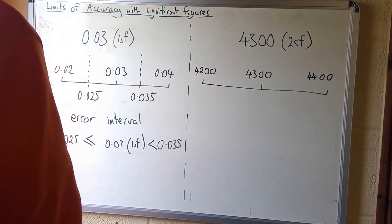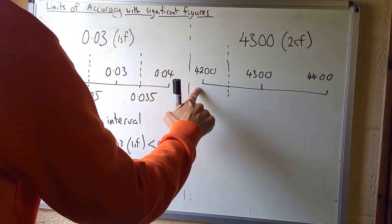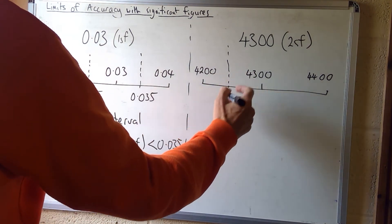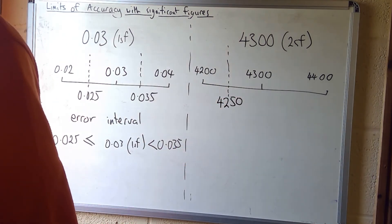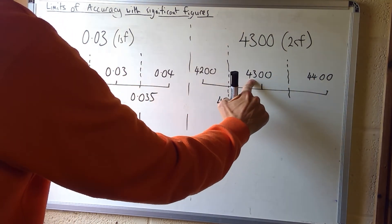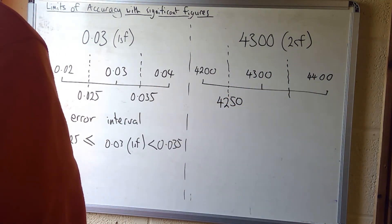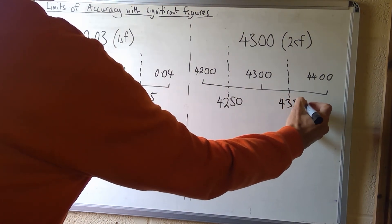Again, thinking of this idea of a scale, there's a point halfway between where it stops rounding to 4,200 and rounds to 4,300. That will be 4,250. When it stops rounding to 4,300 and starts rounding to 4,400, that will be 4,350.